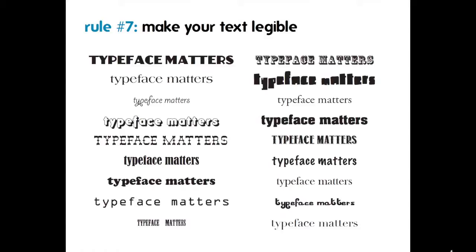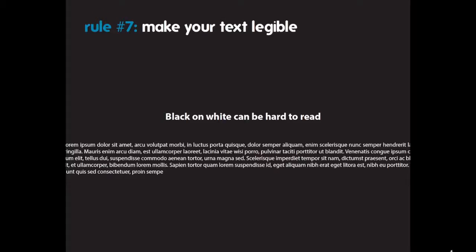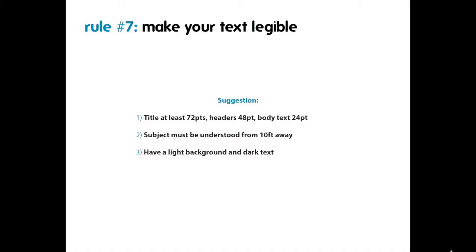Rule number seven is to make your text legible. Typefaces can communicate a mood or suggest an overall tone, so choose one or more wisely. Use no more than three typefaces on a poster, because too many can become distracting and incoherent. White text on a black background can be very difficult to read, so avoid it at all costs. Make sure your text is appropriately sized — if it's too small, people won't see it and it becomes much easier to ignore. As a suggestion, use a 72-point size for a title, 48-point for headers, and 24-point for body text.